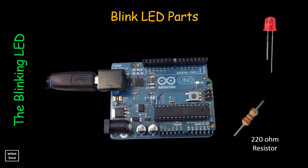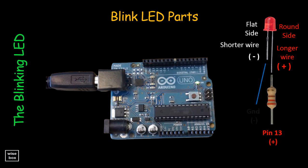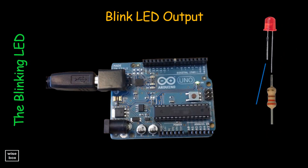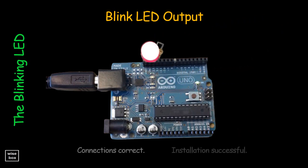Connect the longer LED wire to the resistor, and this goes to pin 13. Then the shorter LED wire goes to the ground pin. When everything is connected properly and the program has been uploaded successfully, the LED bulb will blink every second continuously.